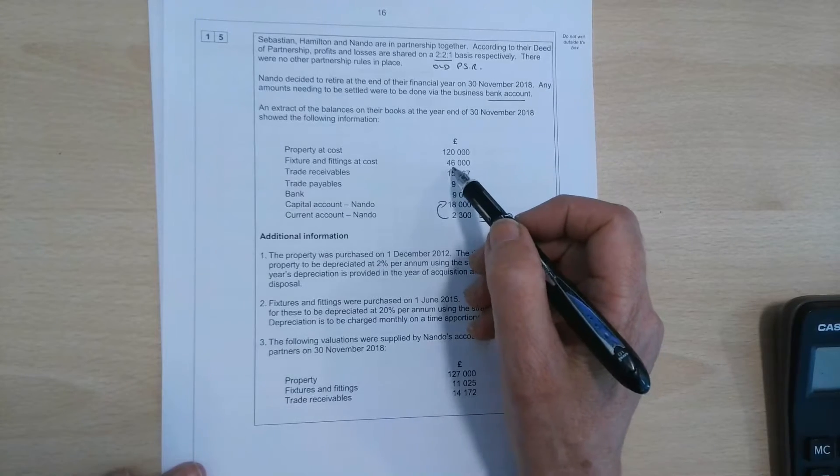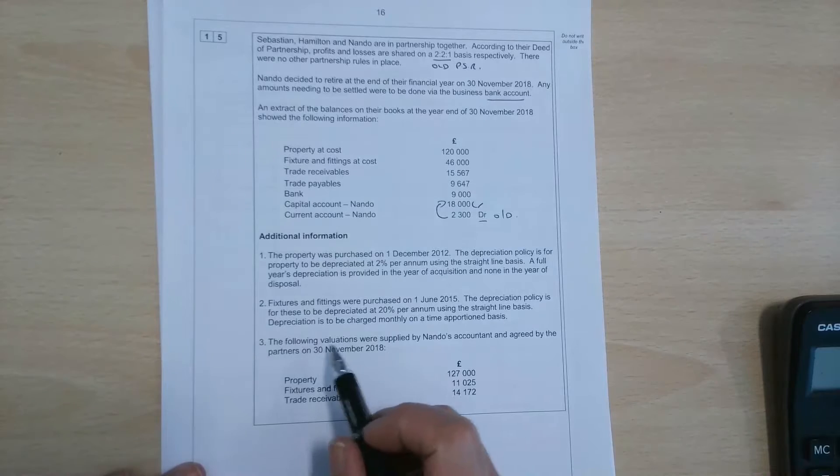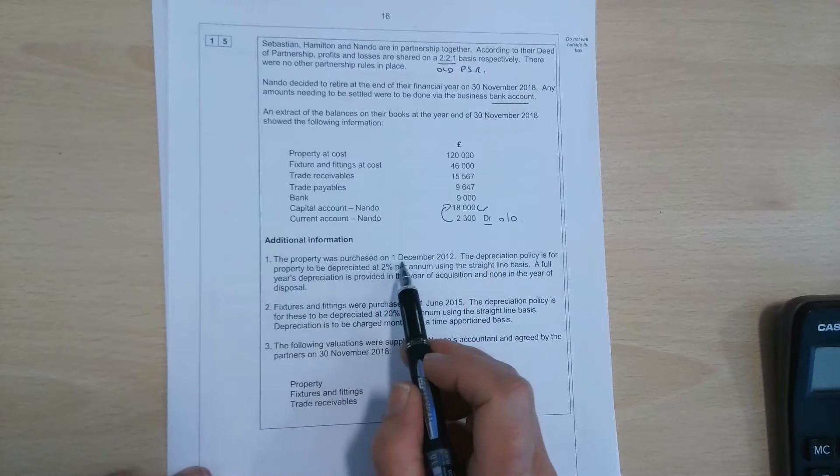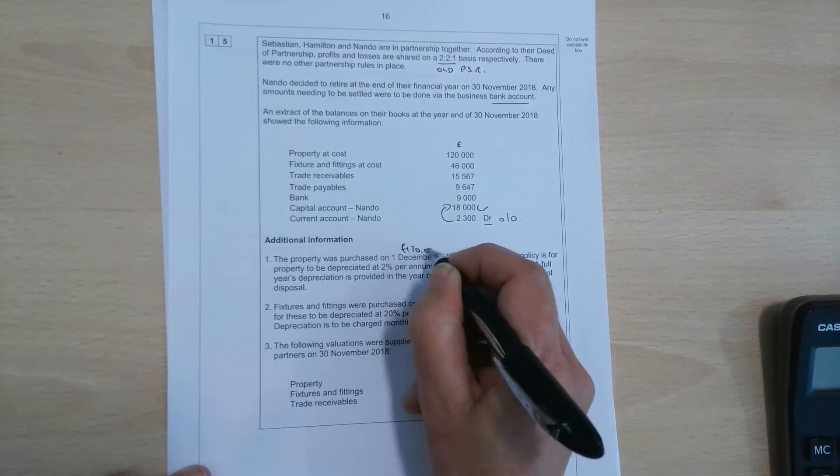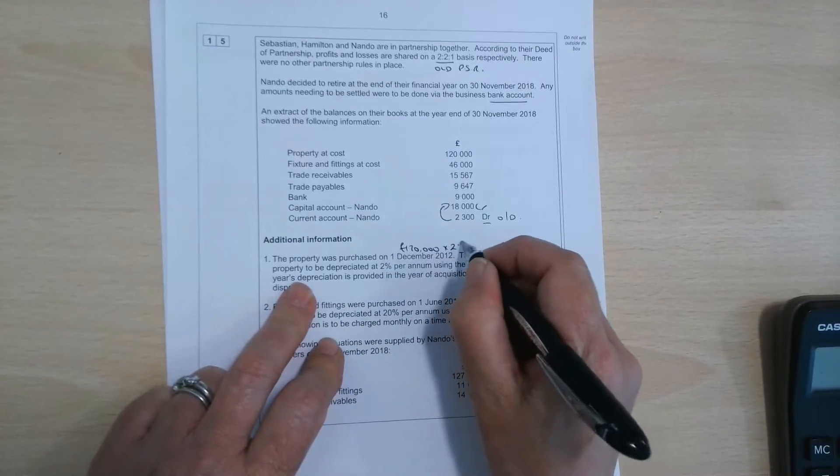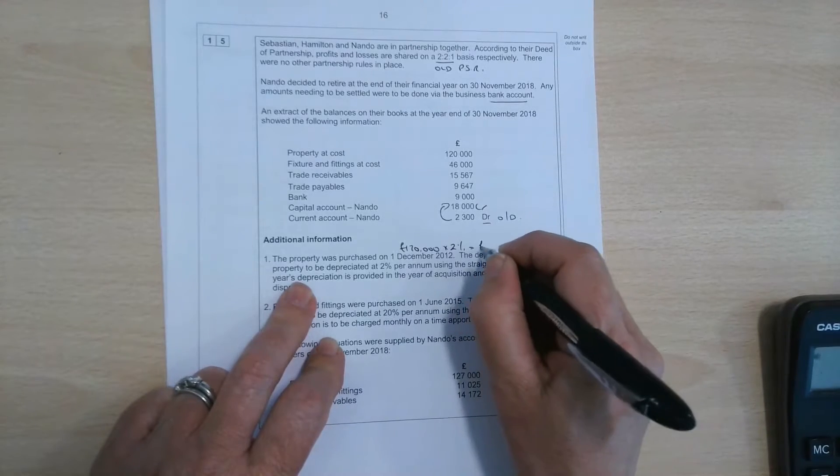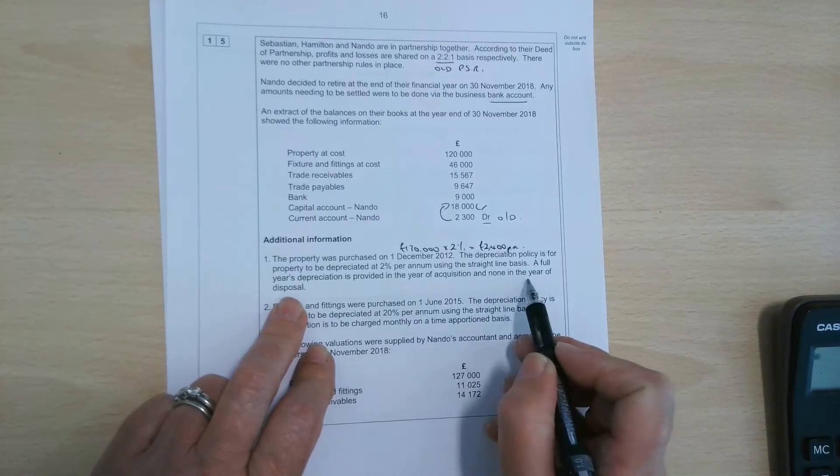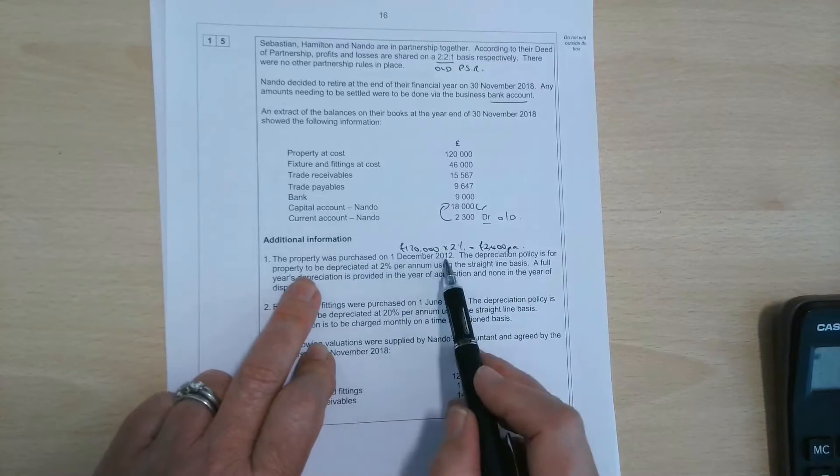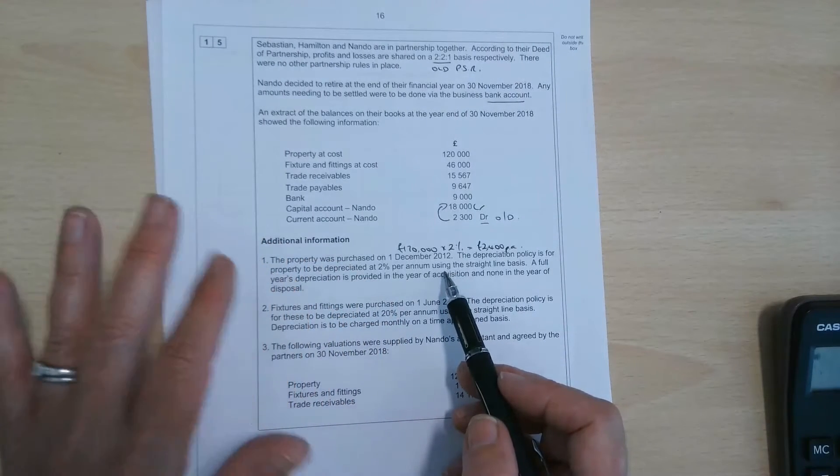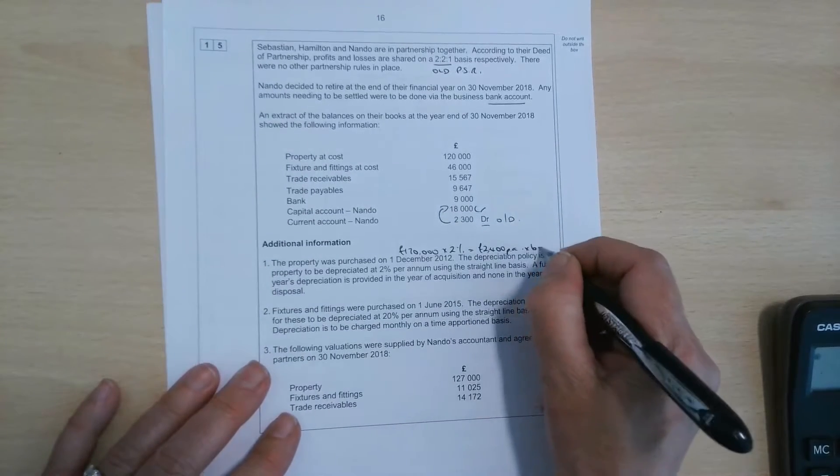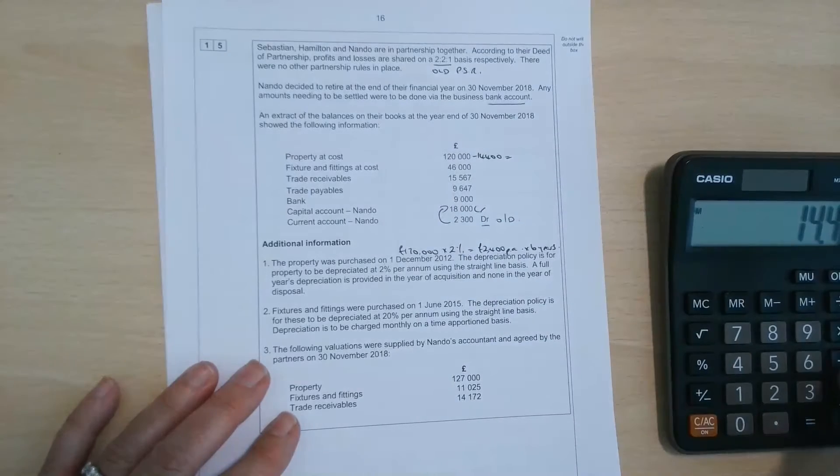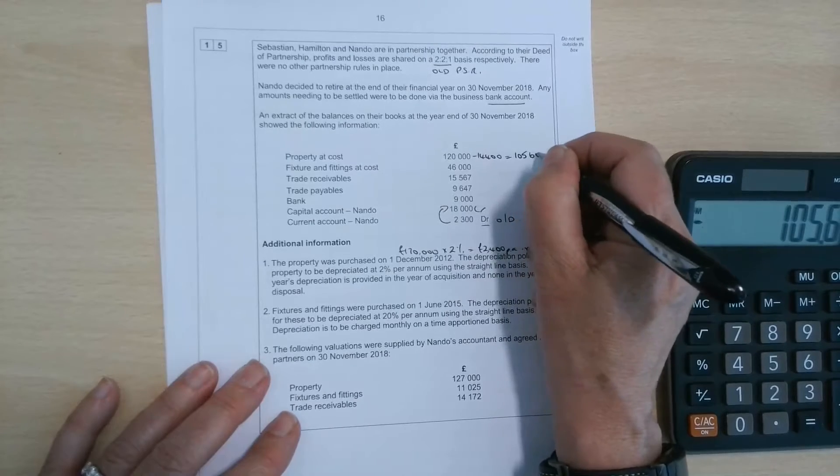Now the thing we haven't got here is any depreciation on the property. It looks like we're going to be doing a revaluation with the additional information that we've been supplied with some valuations. But we haven't got any depreciation, but we have been told how the partnership calculates depreciation. So it says that the property was purchased on the 1st of December 2012. That was for £120,000. The depreciation policy is 2% per annum. So £120,000 times 2%, £2,400 per annum. Using the straight line basis, a full year's depreciation is provided in the year of acquisition, none in the year of disposal. So it's just a case of working out how many years. So since the 1st of December, the first year end was November 2013, 2014, 15, 16, 17, 18. Use your fingers for this. So times that by six years means that the depreciation, 2400 times six is 14,400. So that gives us a net book value of £105,600.